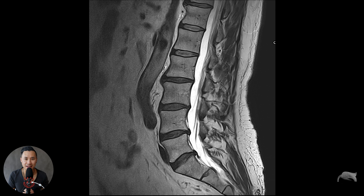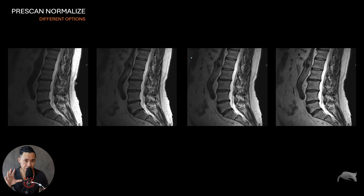It's very easy to show this with spine imaging, so I'm going to show the benefits of having pre-scan normalize on or off and the different options. As you can see here, it goes from very bright near the coil — which is the spine — to very dark in front, then a little bit better, and even better. The different pre-scan normalize options are: off, moderate, normal, and broad range.